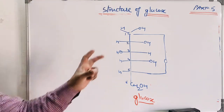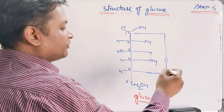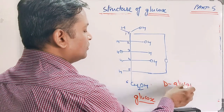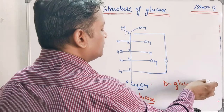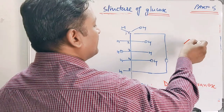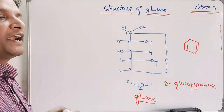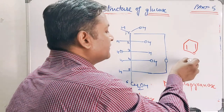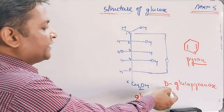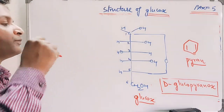It was supposed that glucose was existing in this cyclic form in a six-membered ring. Hence the name of this form of glucose was called D-glucopyranose. It is called pyranose because it contains a six-membered ring, and pyran is a compound which contains a six-membered ring. By similarity to pyran, the term 'pyranose' was coined. So the full name of glucose in this form is D-glucopyranose.